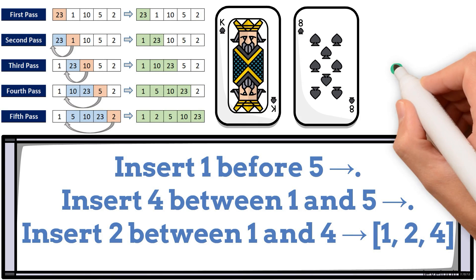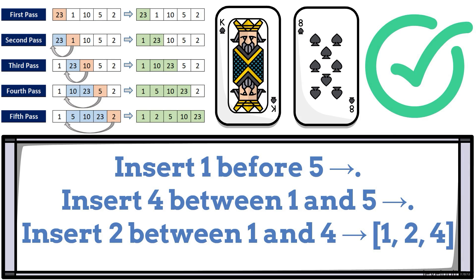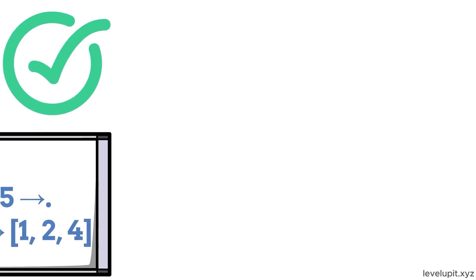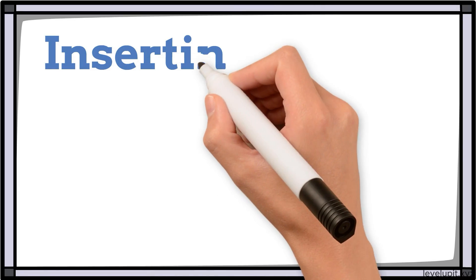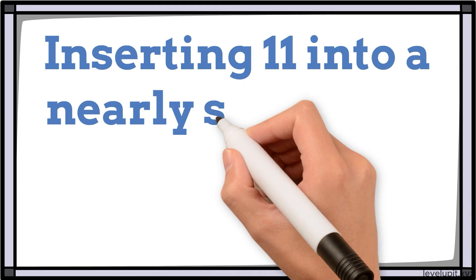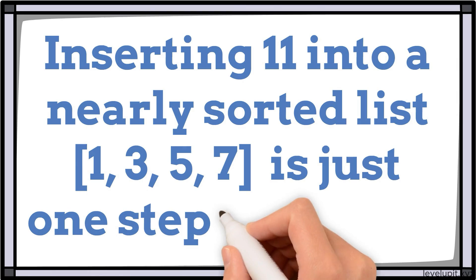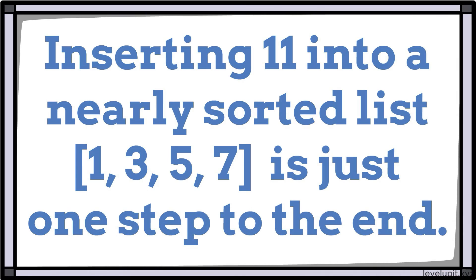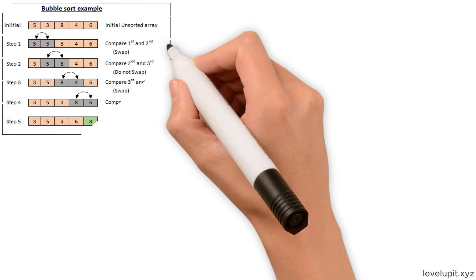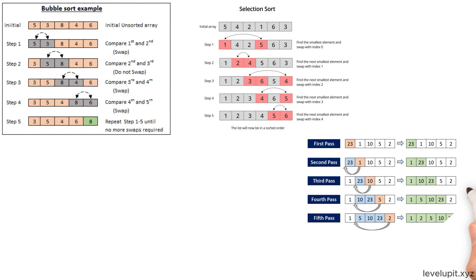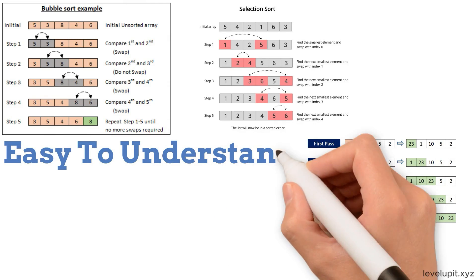If the input is already almost sorted, each insertion moves only a little so it is fast. For example, inserting 11 into a nearly sorted list 1, 3, 5, 7 is just one step to the end. It is great for small lists or when new items trickle into a mostly sorted list. Those three are the simple family. They are easy to understand, but they do not scale well.